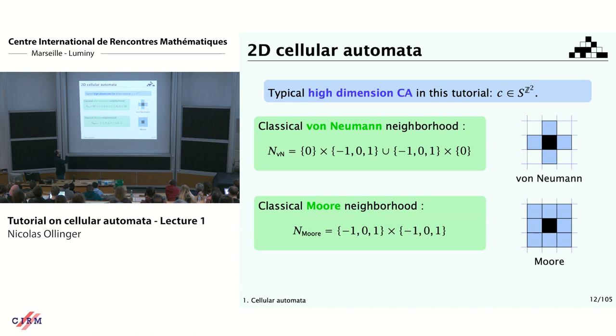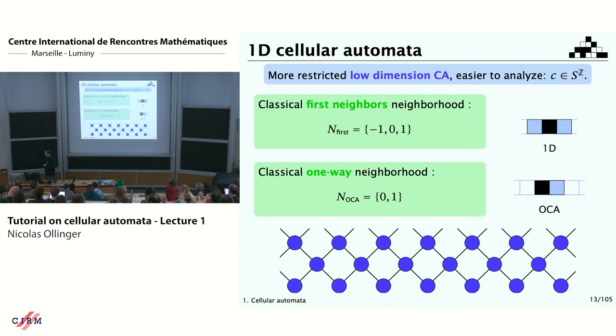In dimension one, I will consider either first neighbors on both sides, or a one-way cellular automaton where I just look in one direction.